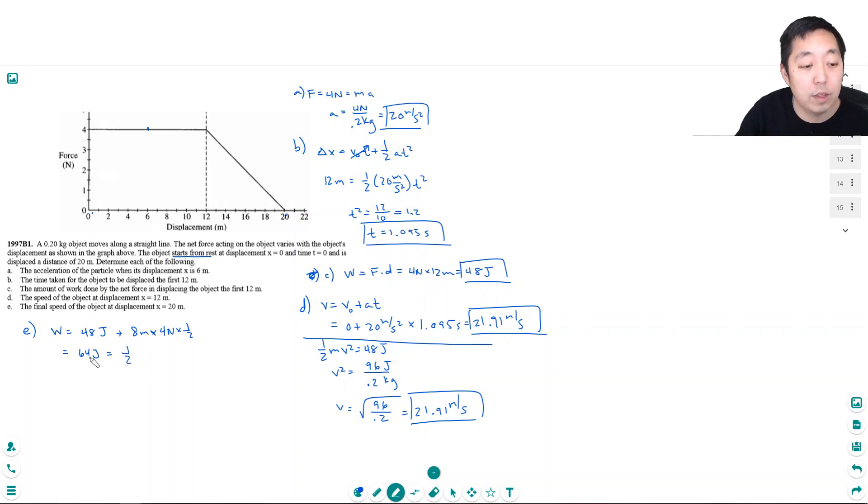That equals 1 half. All that work done had to go into its kinetic energy, because we're assuming no friction. I assume we're assuming no friction. So, 128 multiplying by 2, divided by m, which is 0.2 kilograms, equals v squared. And so, v is equal to the square root of 128 over 0.2. 25.298 meters per second. Okay?